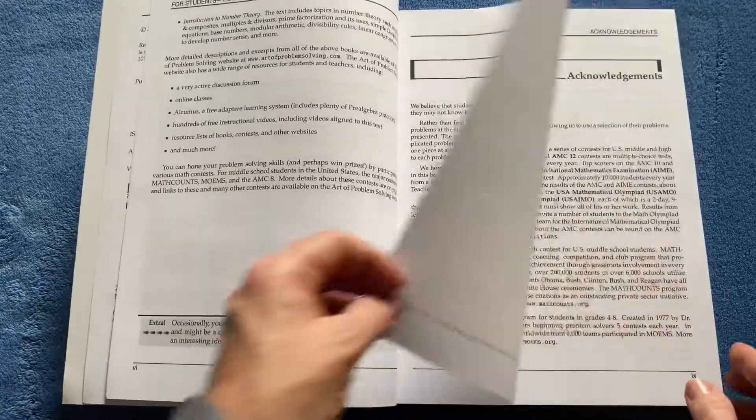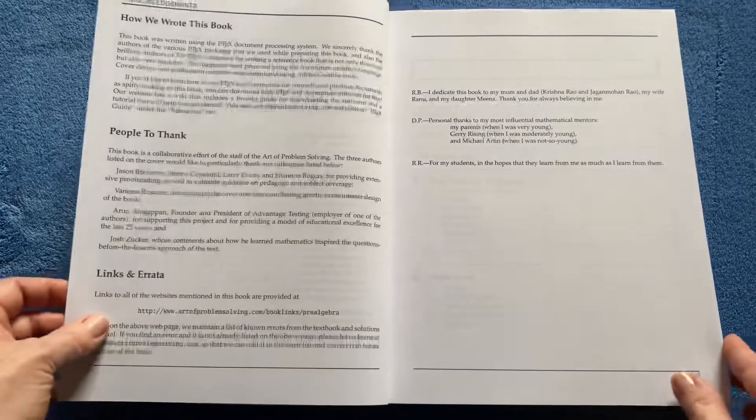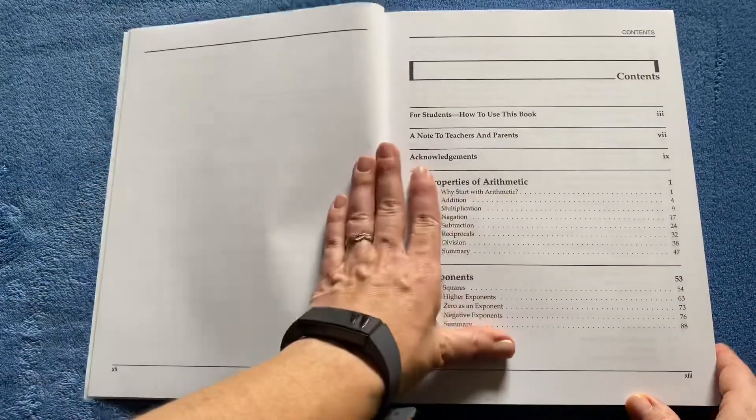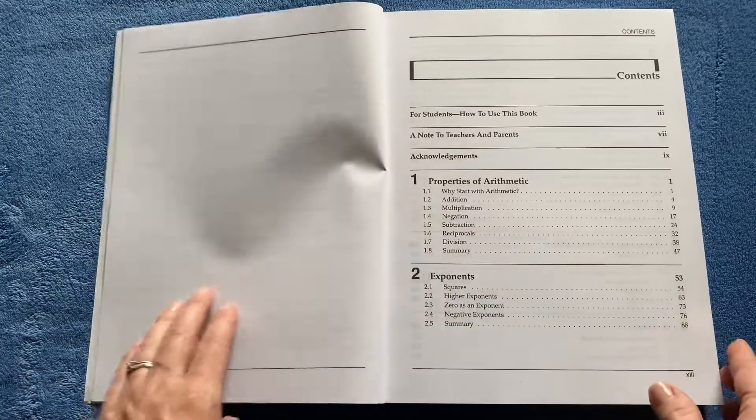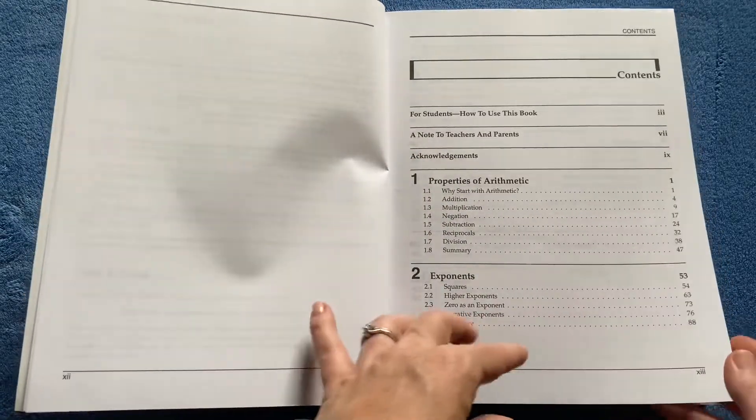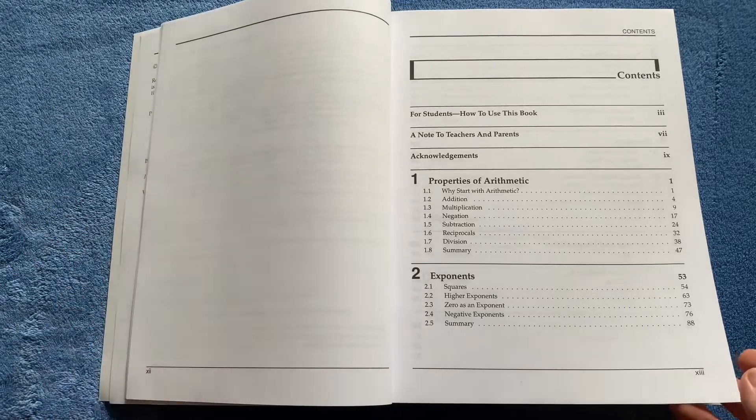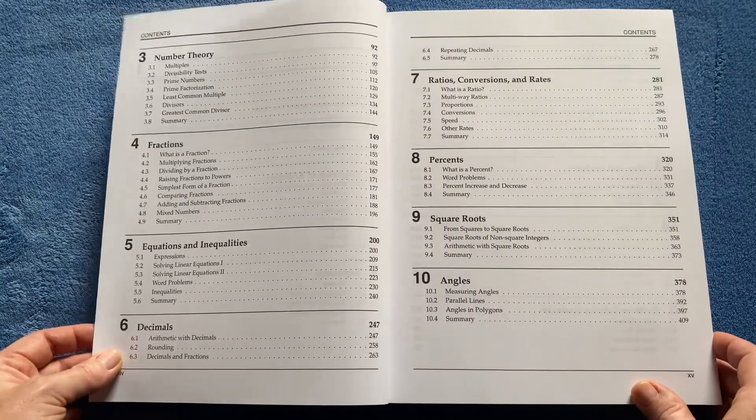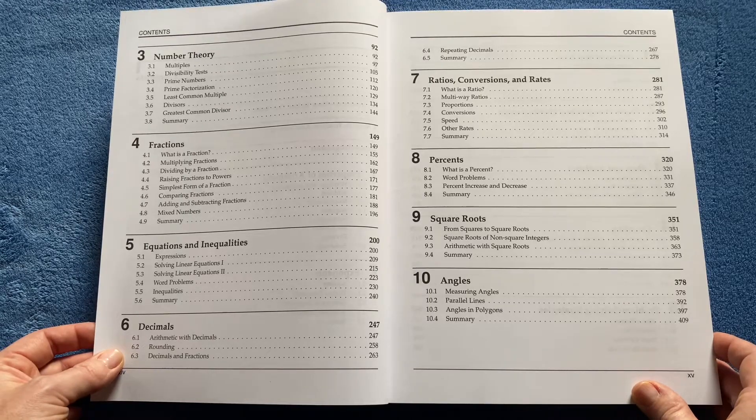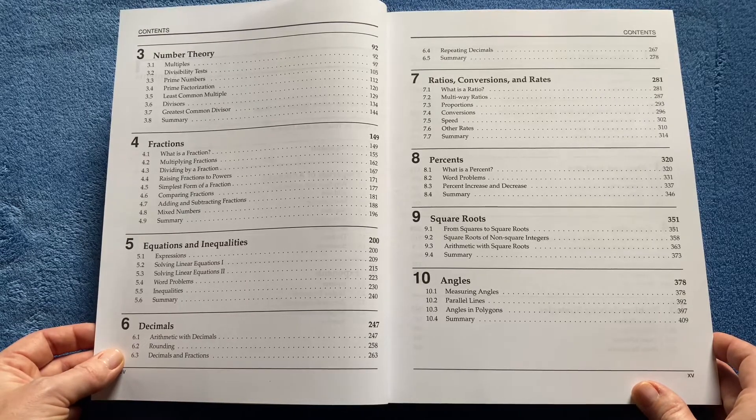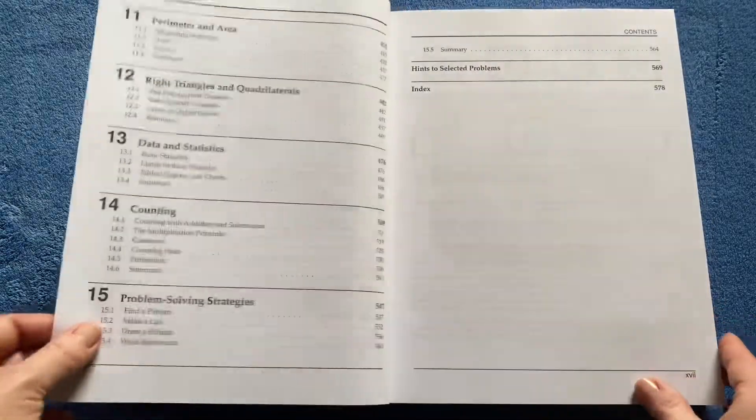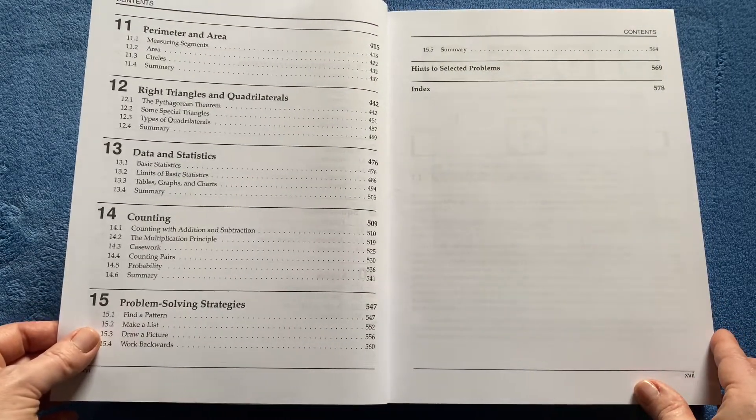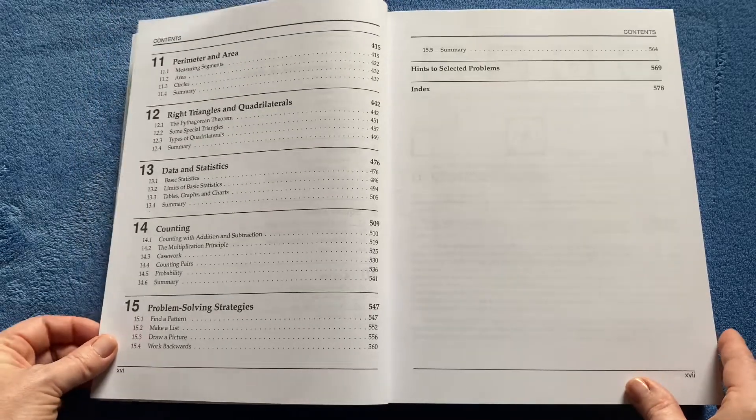So we've got a note to teachers and parents, acknowledgements. And then we're going to go to our table of contents. You can see what we are covering here: Properties of arithmetic, exponents, number theory, fractions, equations and inequalities, decimals, ratios, conversions and rates, percent, square roots, angles, perimeter, area, right triangles and quadrilaterals, data and statistics, counting, problem solving strategies.